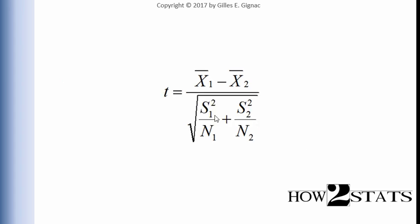There are two factors that play a role in the standard error. First, variability in the data: the larger the variability, the larger the standard error of the difference between two sample means — that's indisputable. Second, sample size: as sample size increases, the standard error of the difference decreases. As we increase the sample size, we increase the confidence we can place in a result related to the difference between two sample means.